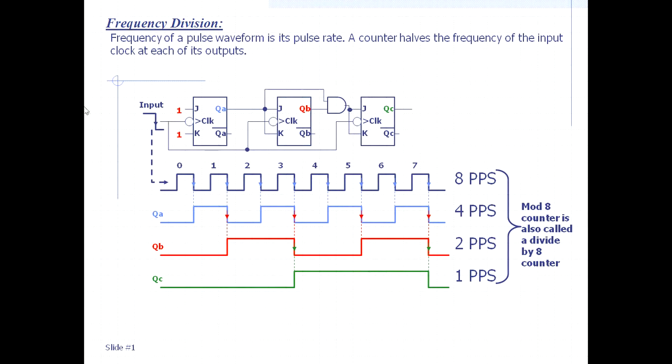Now some frequency is coming, say f. At this point when it is coming out of the first flip-flop, the frequency will be halved. Again after the second flip-flop, the frequency will again be halved - that means f/4 here. F here, f/2 here, f/4, and now after passing through the third flip-flop it becomes f/8.